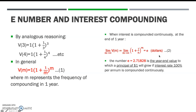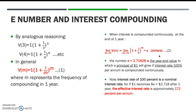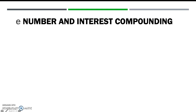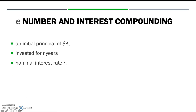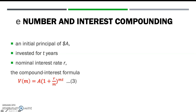Thus, the Euler number e equals 2.71828 can be interpreted as the year-end value to which a principal of $1 will grow if interest at the rate of 100% per annum is compounded continuously. Note that 100% is only a nominal interest rate, for if $1 becomes $e or $2.718 after one year, the effective interest rate is approximately 172% per annum. Now, let's construct the continuous interest compounding formula in general, with an initial principal of $1 invested for T years at a nominal interest rate of R.